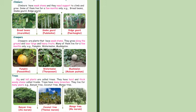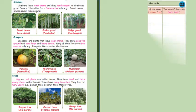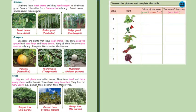Big and tall plants are called trees. They have hard and thick woody stem and they are called trunks. Trees have many branches and they live for many years. Examples are banyan tree, coconut tree and mango tree.